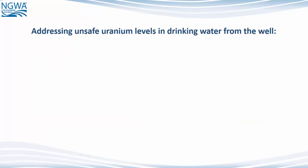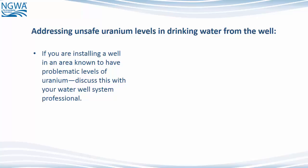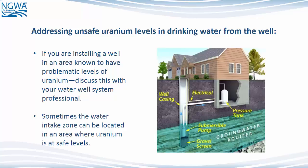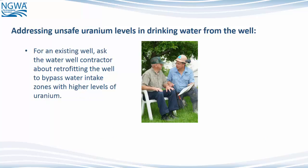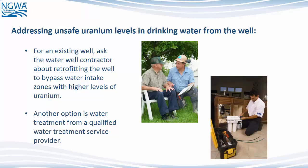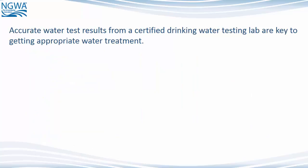Addressing unsafe uranium levels in drinking water from the well. If you are installing a well in an area known to have problematic levels of uranium, discuss this with your water well system professional. Sometimes the water intake zone can be located in an area where uranium is at safe levels. For an existing well, ask the water well contractor about retrofitting the well to bypass the water intake zones with higher levels of uranium. Another option is water treatment from a qualified water treatment service provider. Accurate water test results from a certified drinking water testing lab are key to getting appropriate water treatment.